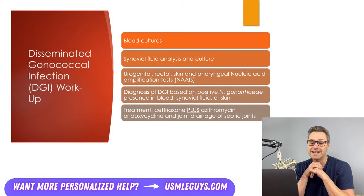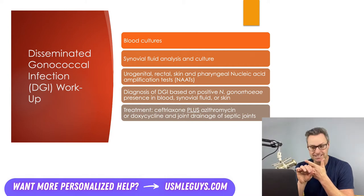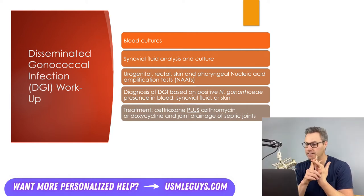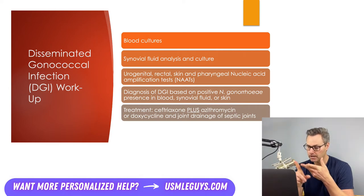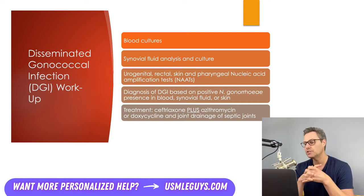The workup for disseminated gonococcal infection includes blood cultures, synovial fluid analysis and culture, as well as nucleic acid amplification tests for mucosal and skin sites — genital, rectal, skin, and pharyngeal. Diagnosis is based on positive Neisseria gonorrhoeae in the blood, synovial fluid, or on the skin. Treatment includes ceftriaxone plus azithromycin or doxycycline, as well as joint drainage of any septic joints.